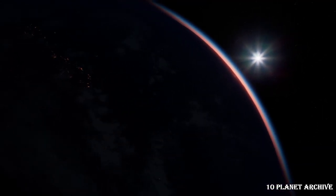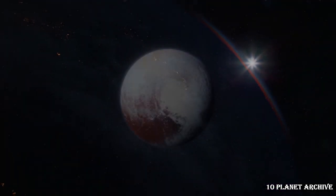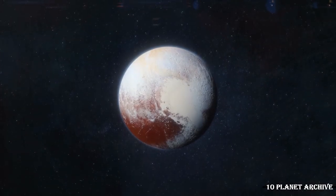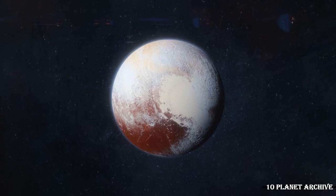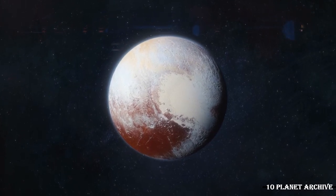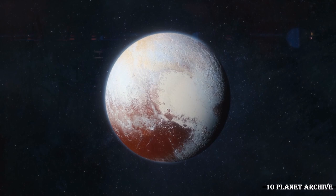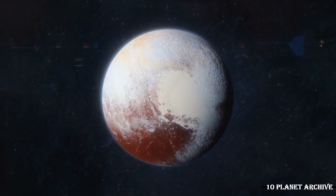Pluto's other four moons are much smaller, less than 100 miles, 160 kilometers wide. They're also irregularly shaped, not spherical like Charon. Unlike many other moons in the solar system, these moons are not tidally locked to Pluto. They all spin and don't keep the same face towards Pluto.